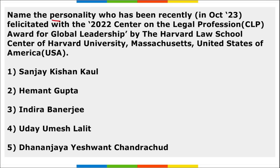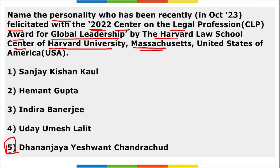Next, name the personality recently facilitated with the 2022 Center on the Legal Profession Award for Global Leadership by Harvard Law School, Harvard University, Massachusetts, USA. It is D.Y. Chandrachud, Chief Justice of India. He was facilitated with this award — the highest professional distinction of the Harvard Law School.